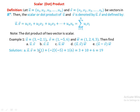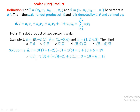Starting with part a, u·v: using the definition, u·v = 3 times 1 plus (-2) times (-5) plus 1 times 6. That gives 3 plus 10 plus 6, which equals 19. Now for v·u, using the definition: 1 times 3 plus (-5) times (-2) plus 6 times 1, which is again 3 plus 10 plus 6, giving 19.